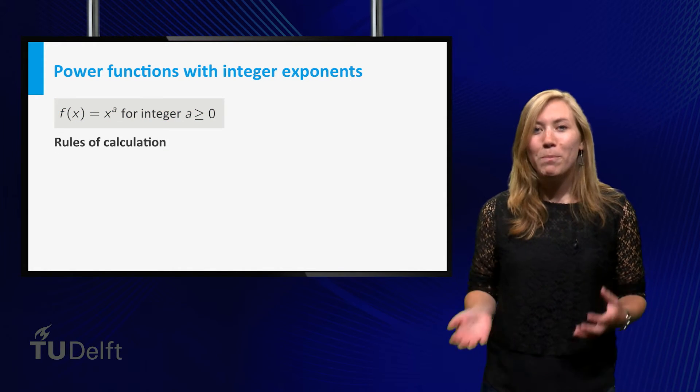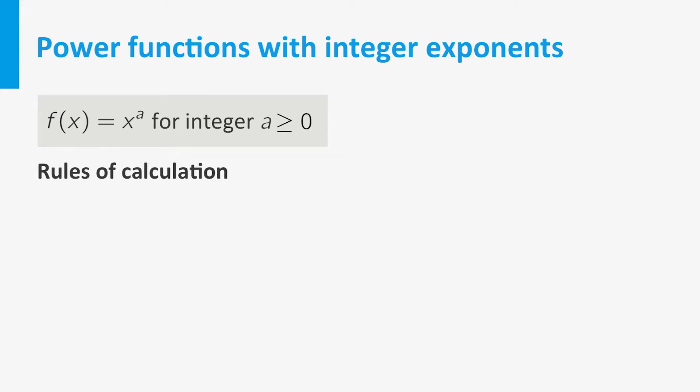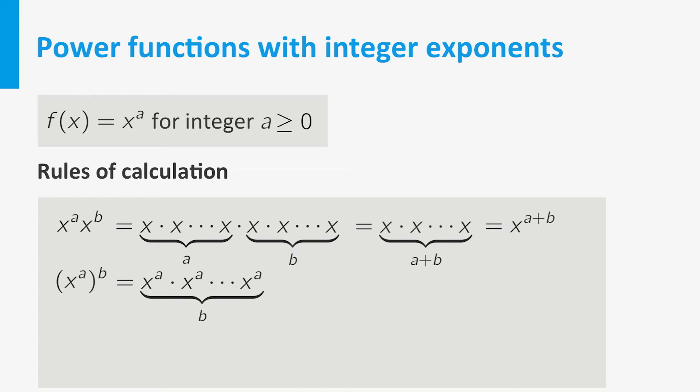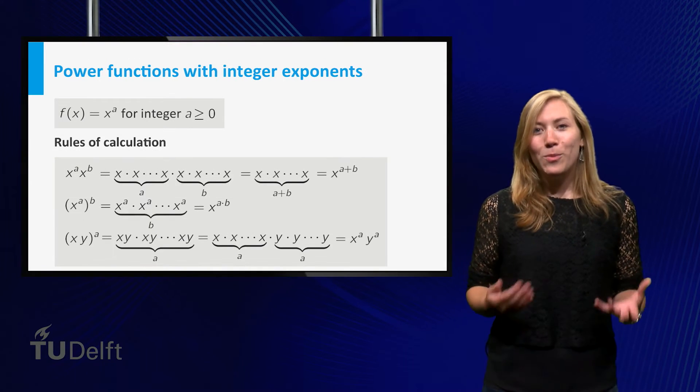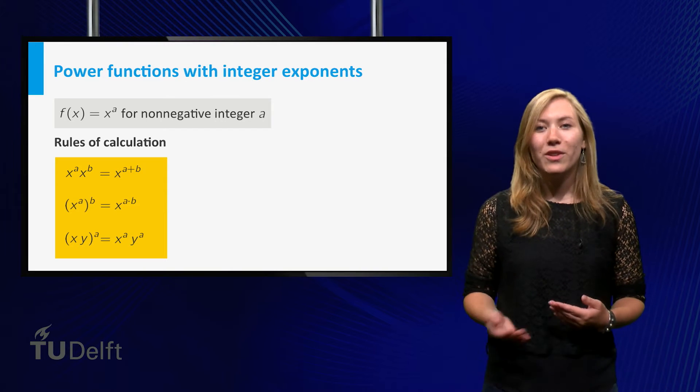For power functions with positive integer exponents, we easily check the following rules of calculation. x to the power a times x to the power b is a product of a plus b x's and is therefore equal to x to the power a plus b. x to the power a to the power b is a product involving b factors of x to the power a and is therefore equal to x to the power a times b. And x times y to the power a is a product of a factors x times y. Reordering the terms leads to x to the power a times y to the power a. To be able to deal with power functions, it is important that you know these rules.